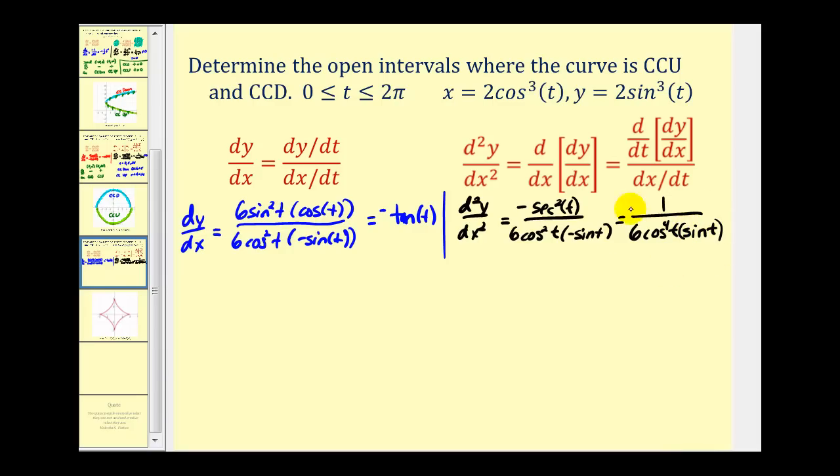Now again, this will never equal zero because our numerator is equal to one. But this will be undefined when cosine t or sine t is equal to zero. So cosine t will be equal to zero at pi over two and three pi over two. And sine t is equal to zero at zero, pi, and two pi.